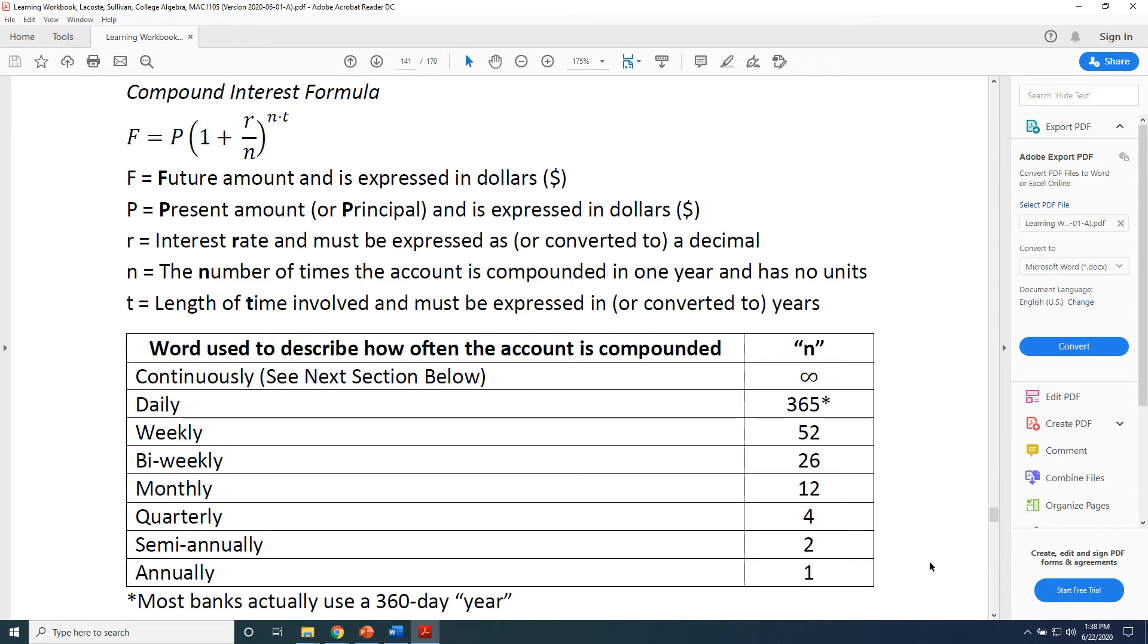Semi-annually would be n equals two. Semi means half. So semi-annually means you go half the year and you get paid, and then you go the other half of the year and you get paid. You're getting paid two times in one year.